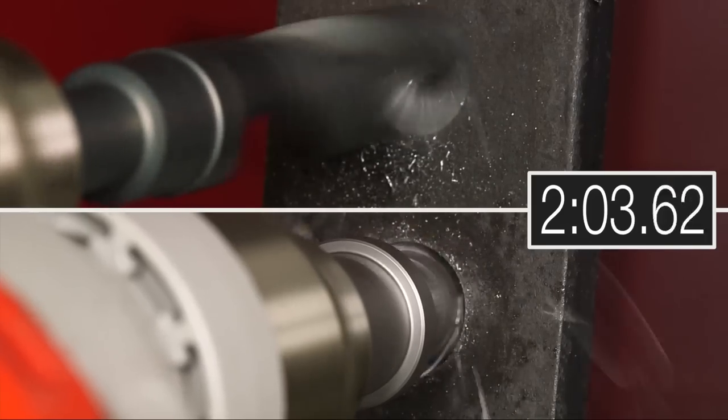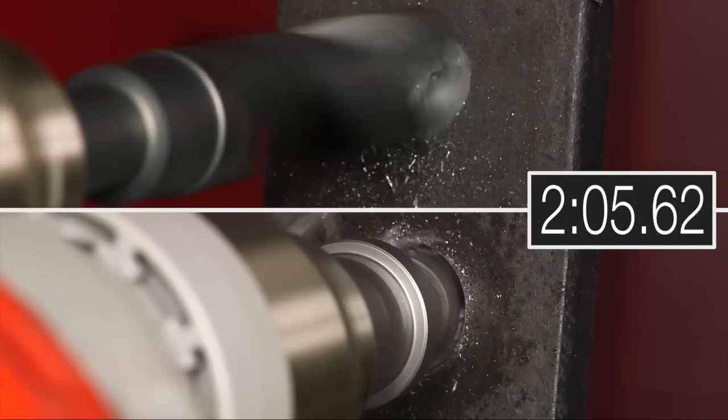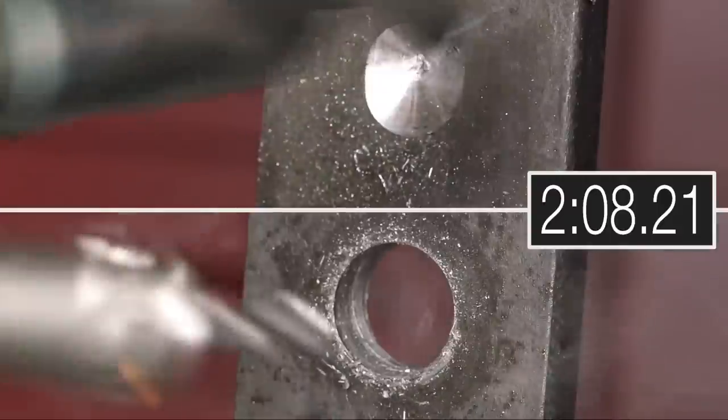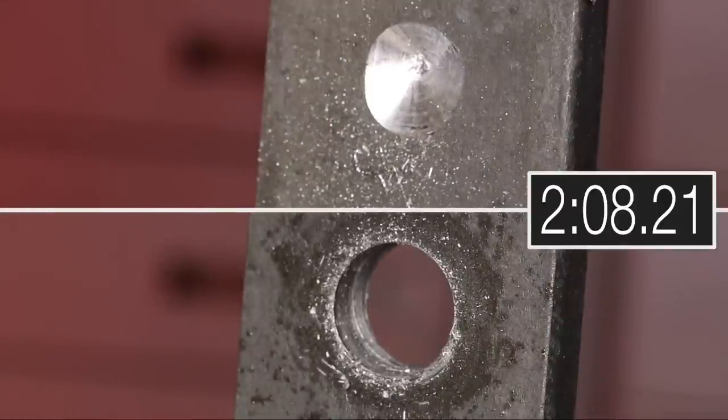You've just watched us make a three-quarter inch hole in a half-inch thick piece of steel plate in two minutes, eight seconds. When we tried this with a typical heavy-duty drill bit, in that same amount of time, all it could do was leave a tiny dimple in the metal.